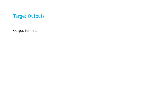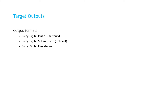Let's briefly identify the outputs we'll produce for each of the three languages we'll be working with, all from the 5.1 source. First, we'll produce Dolby Digital Plus 5.1 surround output. Then we'll produce Dolby Digital 5.1 surround output for older legacy devices, but that's optional. Then we'll produce Dolby Digital Plus stereo for devices that can play it natively. And finally, AAC stereo for devices without Dolby playback.